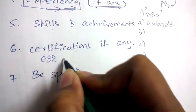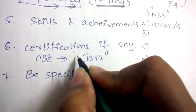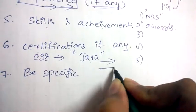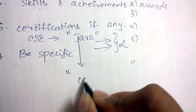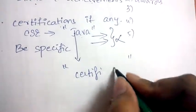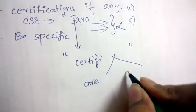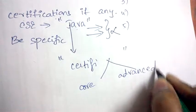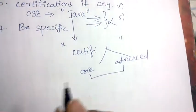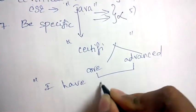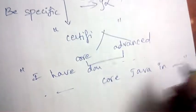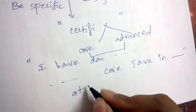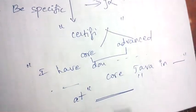Next, mention certifications if any. For example, if you are a computer science student and have done a certification course in Java, mention the certification clearly — for instance, whether it is Core Java or Advanced Java. State something like: 'I have done a certification course on Core Java in such-and-such year.' You can also mention where you obtained the certificate if you wish.